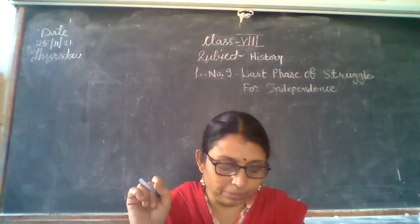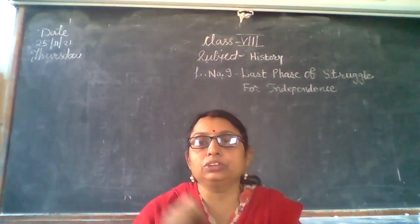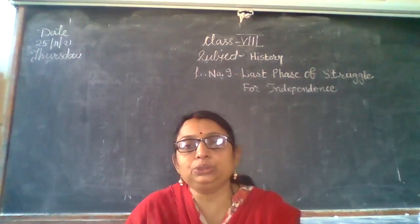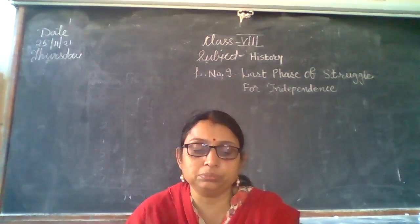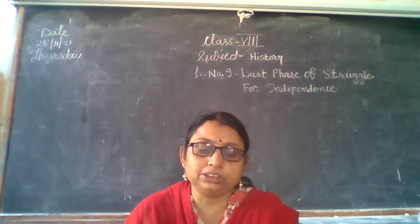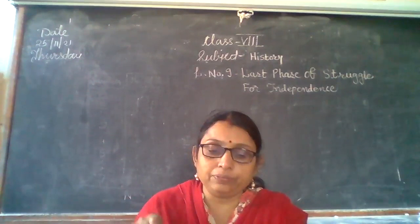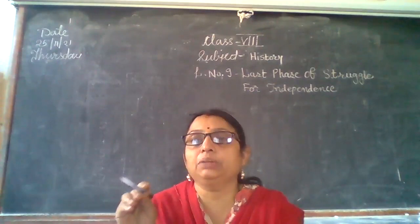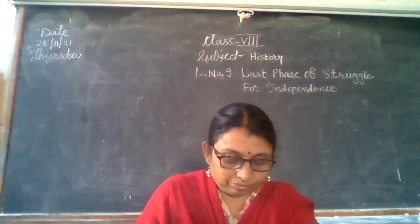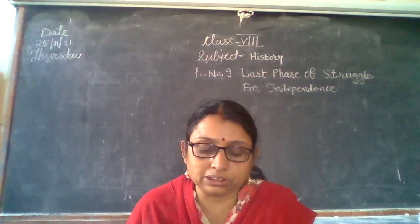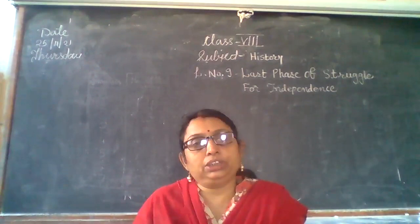In March 1942, Sir Stafford Cripps came to India and put up a proposal before the Indians. But none of the political parties were satisfied with this proposal. The Indian National Congress rejected it since there was no clear mention of complete independence. Since there was no clear mention of the creation of Pakistan, the Muslim League also rejected the Cripps Mission.